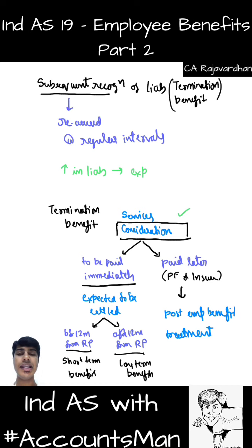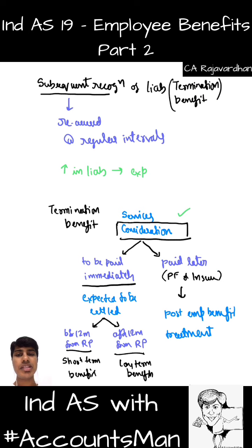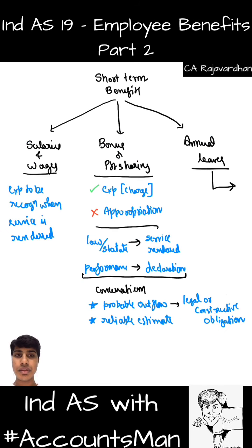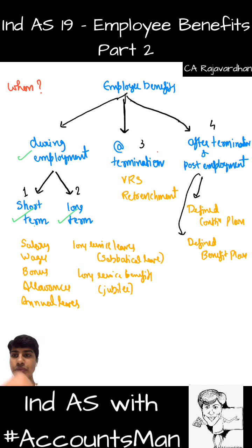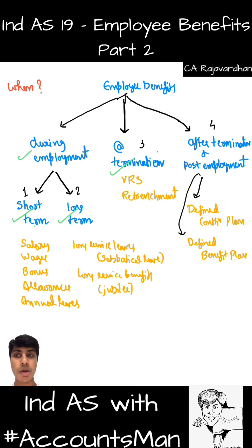This is how we account for the liability arising because of termination benefits. We discussed initial and subsequent recognition. We are now done with termination benefits. The last thing remaining in this standard is after-termination or post-employment benefits. So let us now discuss the fourth and last part of our standard — post-employment benefits.